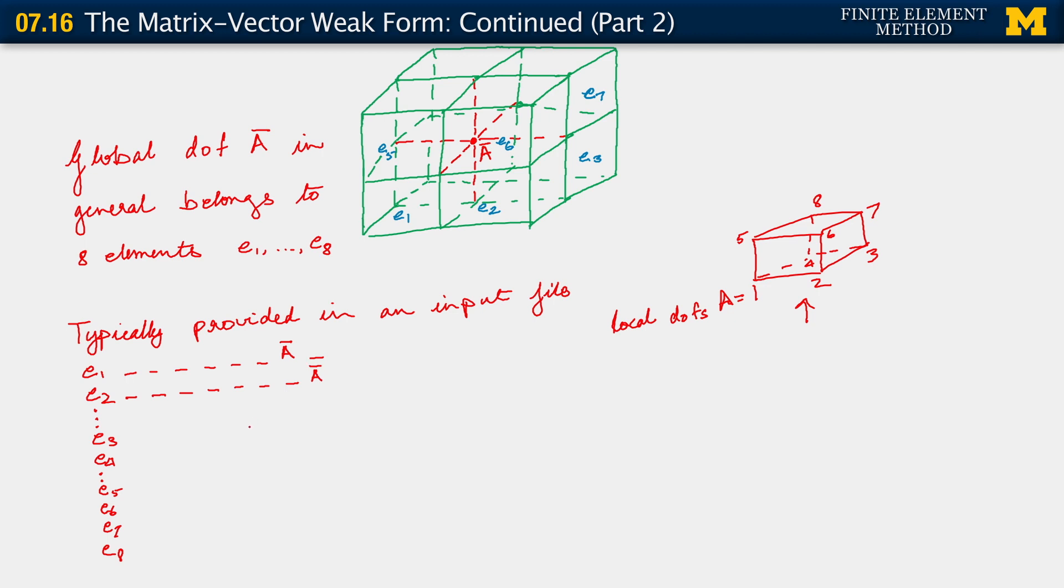I'll just complete it for this case. For e3, it is five. So one, two, three, four, a bar which is five, six, seven, eight. For element e4, which is the one on the bottom layer behind and to the left, a bar is degree of freedom six. So for e4 it's one, two, three, four, five, a bar, seven, eight.